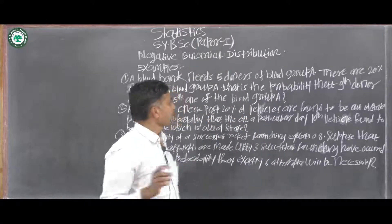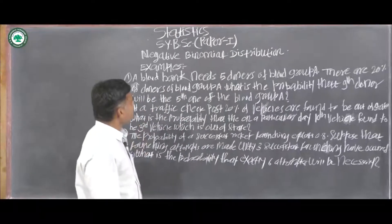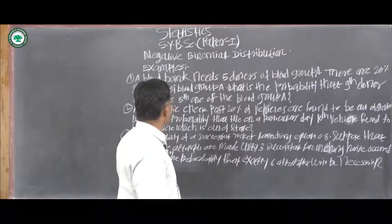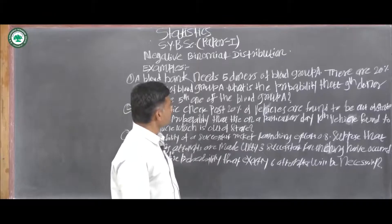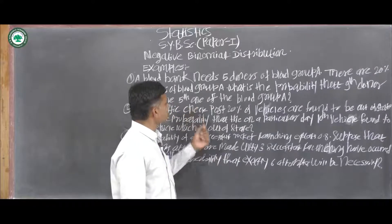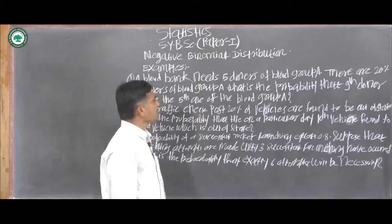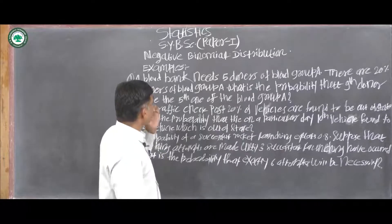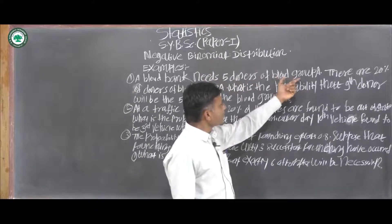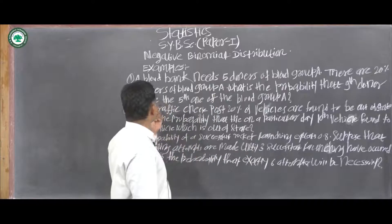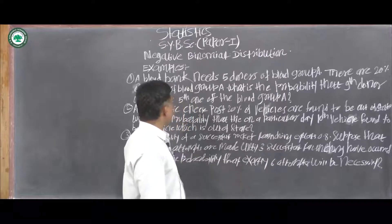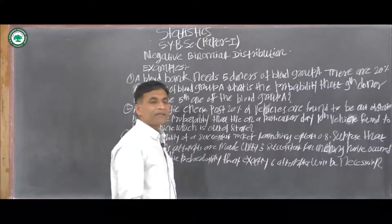The first example: a blood bank needs 5 donors of blood group A. There are 20% donors of blood group A. What is the probability that the 9th donor will be the 5th one of blood group A?